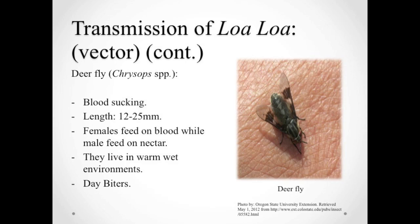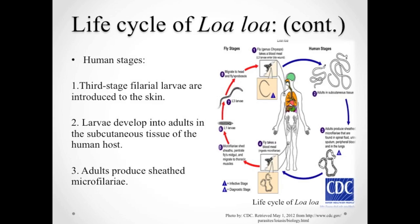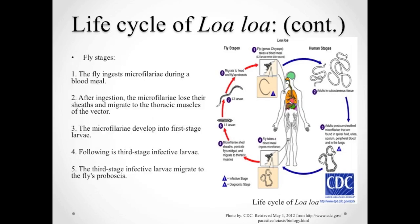Pain and itch are the most common symptoms of deer fly bites, but more significant allergic reactions can also develop. The life cycle of Loa loa can be divided into two parts: fly stages and human stages. In the human stage, third-stage filarial larvae are introduced to the skin of a human host through a bite by a deer fly during a blood meal. These larvae develop into adults found in the subcutaneous tissue. Adults then produce sheathed microfilaria found in spinal fluids, urine, sputum, blood, and in the lungs.